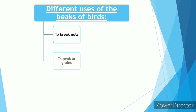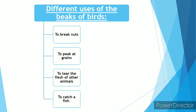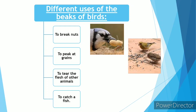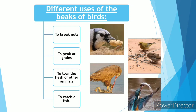Birds' beaks can be used to break nuts — their beaks are so hard they can crack nuts open. They can also pick grains from the ground, as you have seen pigeons do. They can tear the flesh of other animals, like crows and eagles do, and they can also catch fish, like the kingfisher. See the pictures to understand the uses of their beaks.